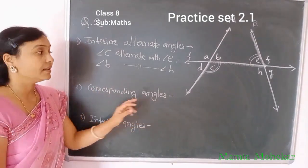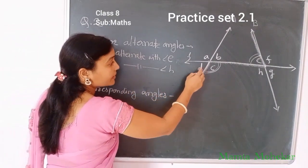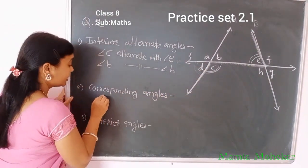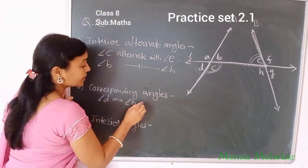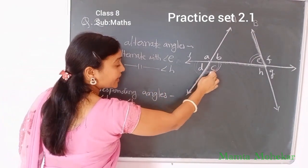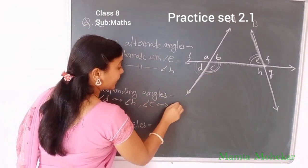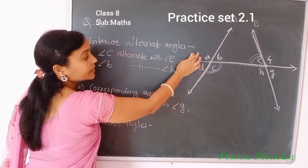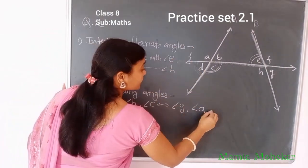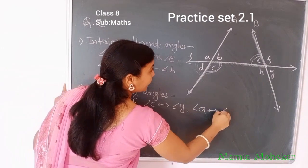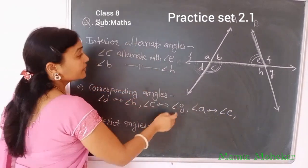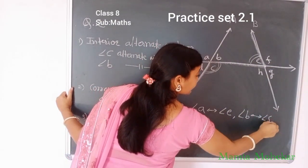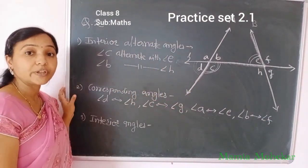Our next part: write the names of corresponding angles. Angle B corresponds to angle H. Angle D corresponds to angle H. Angle C corresponds to angle G. On the other side of the transversal, angle A corresponds to angle E, and angle B corresponds to angle F. These are the corresponding angles.